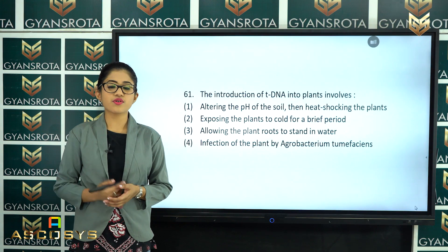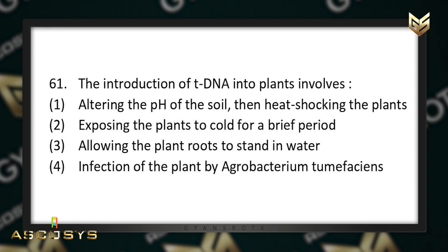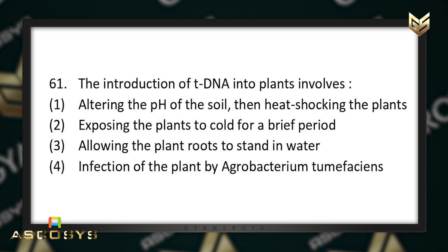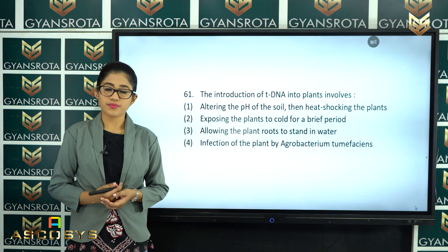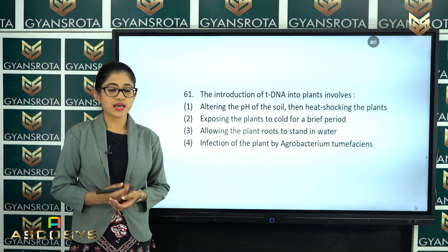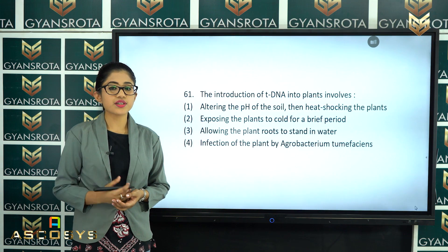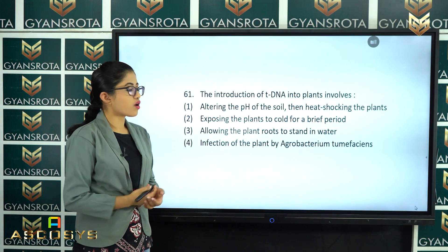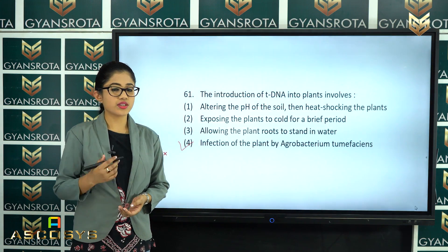The next question is question number 61. The introduction of T-DNA into plants involves: altering the pH of the soil then heat shocking the plants; exposing plants to cold briefly; allowing plant roots to stand in water; or infection of the plant by Agrobacterium tumefaciens? From the chapter Biotechnology: Principles and Processes, T-DNA (Ti plasmid) initiates tumors in plant cells. Option number 4 — infection of the plant by Agrobacterium tumefaciens — is the correct answer.